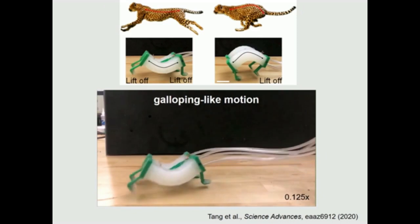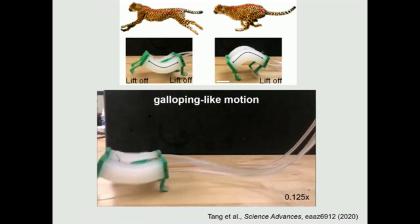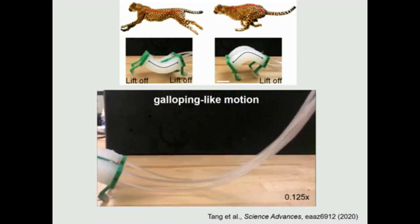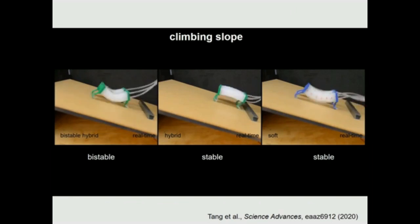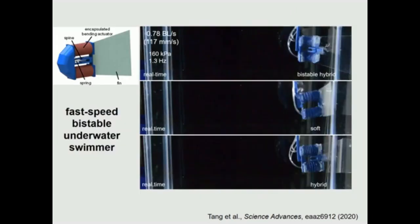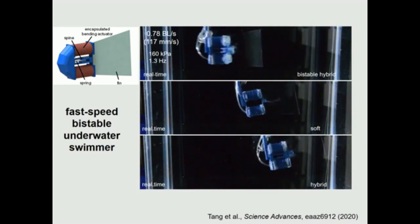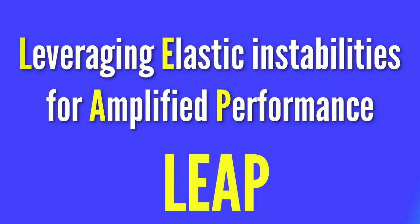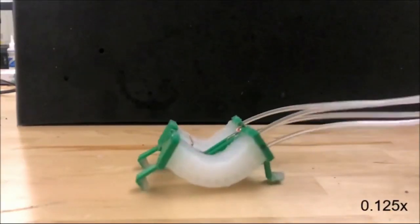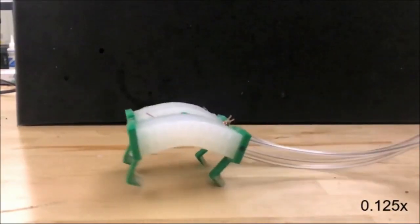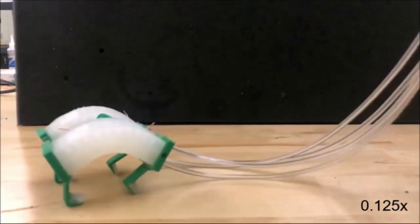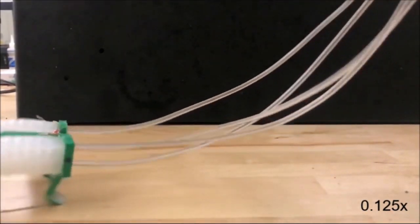The fastest soft robots until now could move at speeds of up to 0.8 times body lengths per second on flat, solid surfaces. The new class of soft robots, which are called Leveraging Elastic Instabilities for Amplified Performance LEAP, are able to reach speeds of up to 2.7 times body lengths per second, that is more than three times faster, at a low actuation frequency of about 3 Hz.